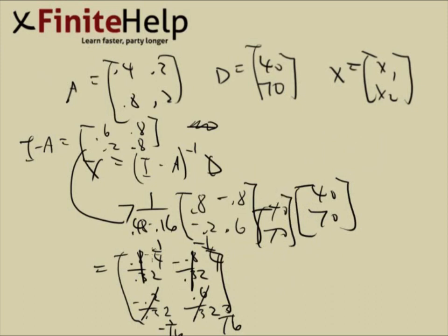Multiplying 1/4th times 40 is 10. Negative 1/4th times 70 is going to be 70 over 4. So, this is 40 over 4, minus 70 over 4, which is negative 30 over 4. And we don't have to calculate the y because we asked for x1. So, this is your final answer.